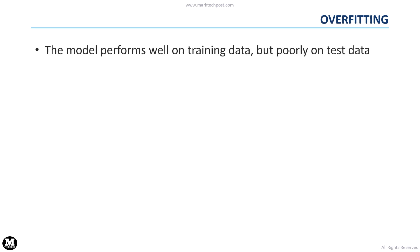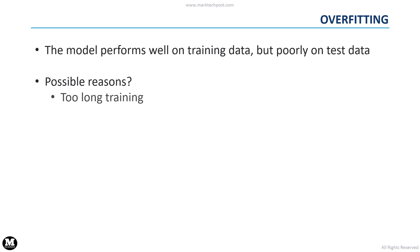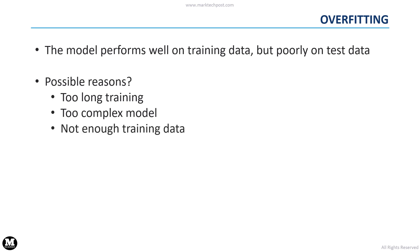We have to face the overfitting problem when the model performs very well on the training data, but poorly on the test set. This means that it cannot generalize well to unseen data. We can notice overfitting when we have a low error rate on training data but a high error rate on the test data. Overfitting can especially happen when the machine learning algorithm has been trained for too long, when the model is too complex, or when we do not have enough training data.